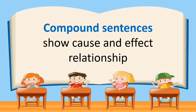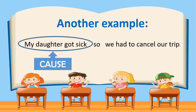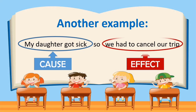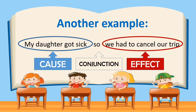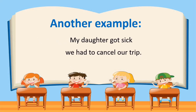Compound sentences show cause-and-effect relationships. Here is another example. Let's read it together: My daughter got sick, so we had to cancel our trip. What is the cause? My daughter got sick — that is the cause. What is the effect? We had to cancel our trip — that is the effect. The cause and the effect were joined together by the conjunction "so" to form a compound sentence.